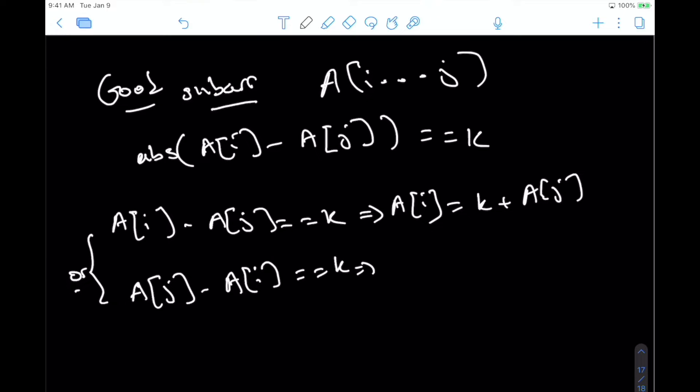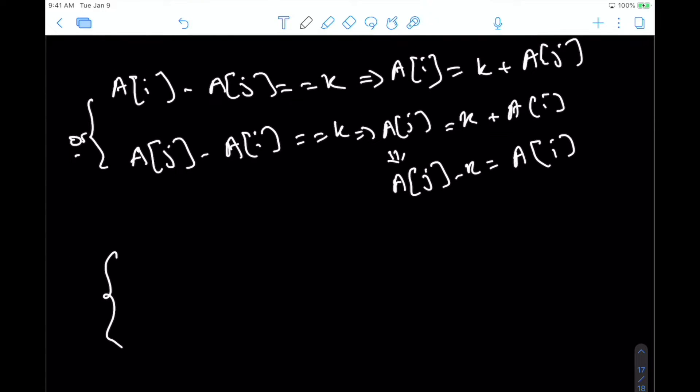And then for this specific case, we can first add a_i from both sides. So that will leave us with a_j equal to k plus a_i. And from this, we can actually subtract k from both sides. And so that, if we do that, then a_j minus k is equal to a_i. So what does this mean? So these two now become a_i is either going to be equal to a_j plus k, or a_i is equal to a_j minus k. So only in these two conditions, the subarray would be good.